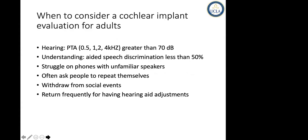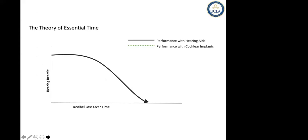One way to improve referrals is to make the referral criteria much easier for community audiologists. For example, when the PTA is greater than 70 decibels and when speech discrimination is less than 50%, they need to be referred. When patients are struggling on the phone with unfamiliar speakers, often need to ask what others are saying, withdrawing from social events due to inability to hear, or constantly coming back to have hearing aids adjusted, they probably need to be examined by experienced audiologists and candidacy for cochlear implantation needs to be established.